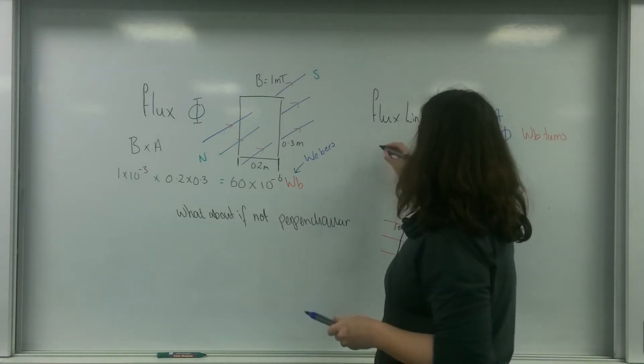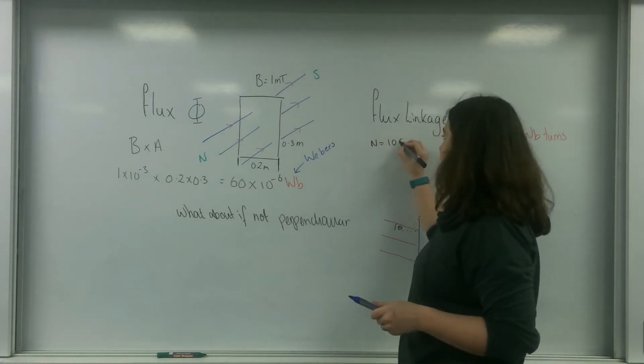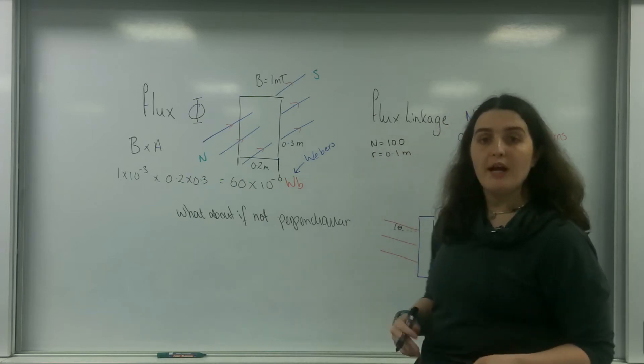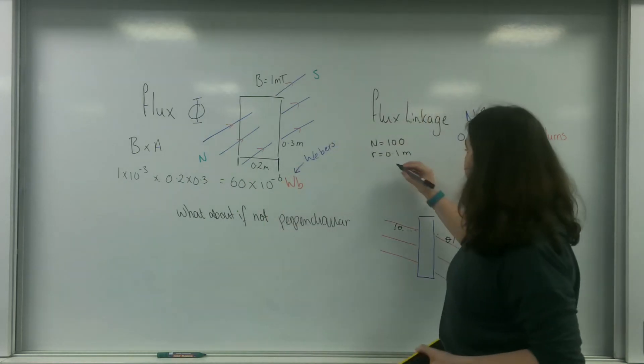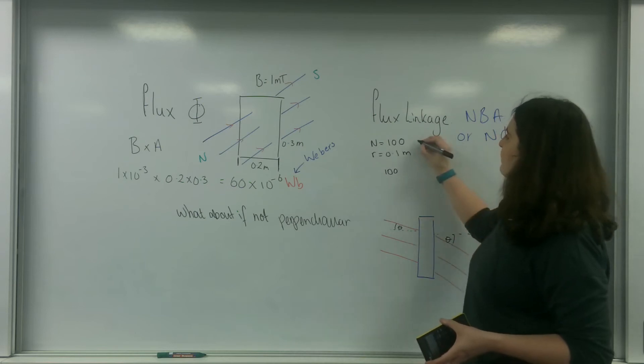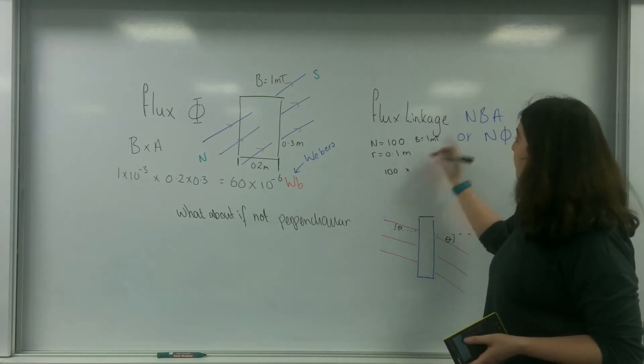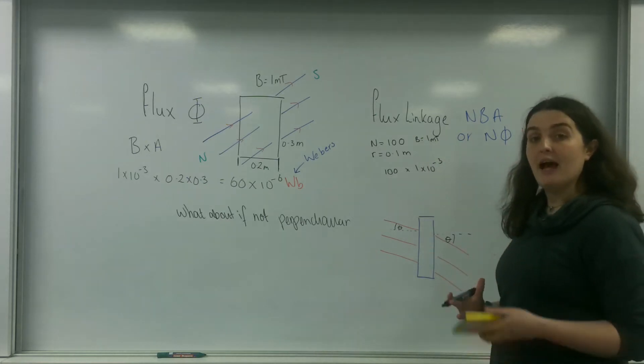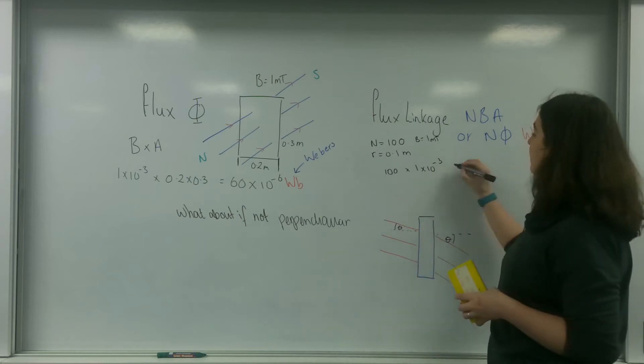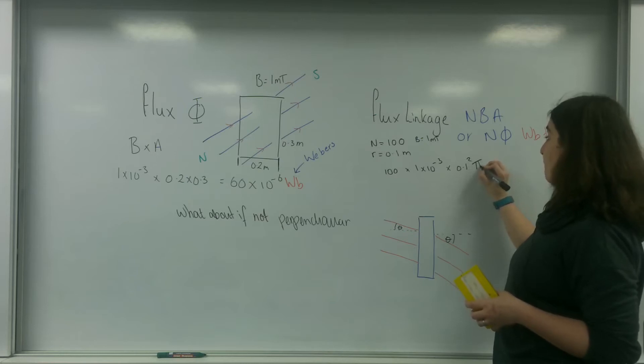Let's take a wire. I have something with 100 turns and a radius of 0.1 meters, and I want to work out the flux linkage. This is going to be 100. Let's say the field strength, by the way, is again 1 millitesla, times by B which is 1 times 10 to the minus 3, times by my area. This area is a circle, so this is going to be 0.1, R squared, times by pi.